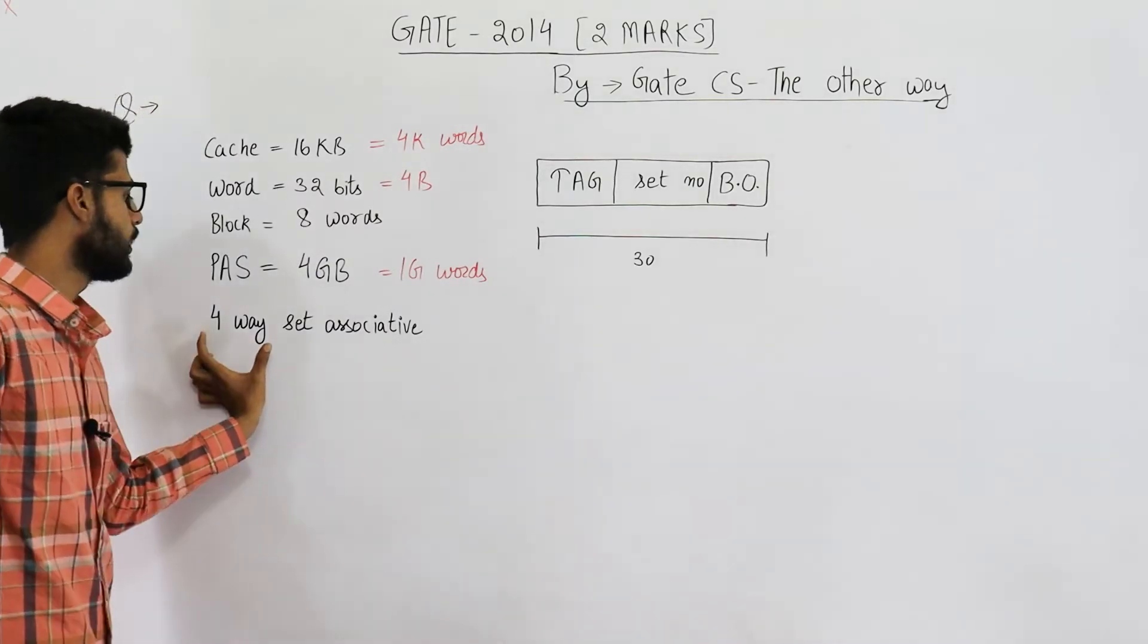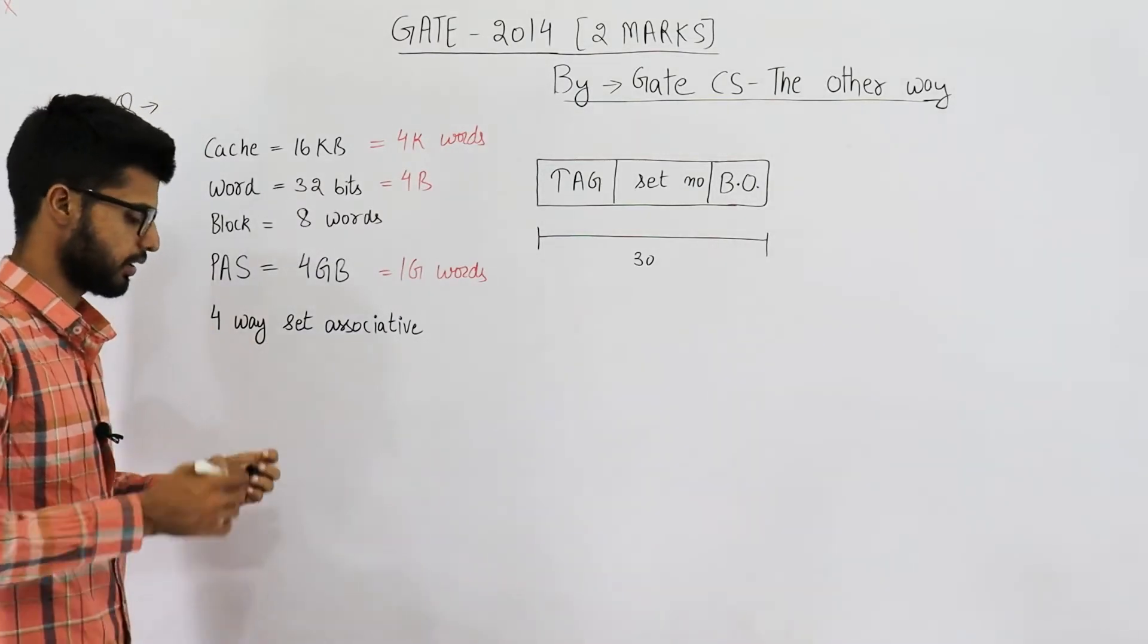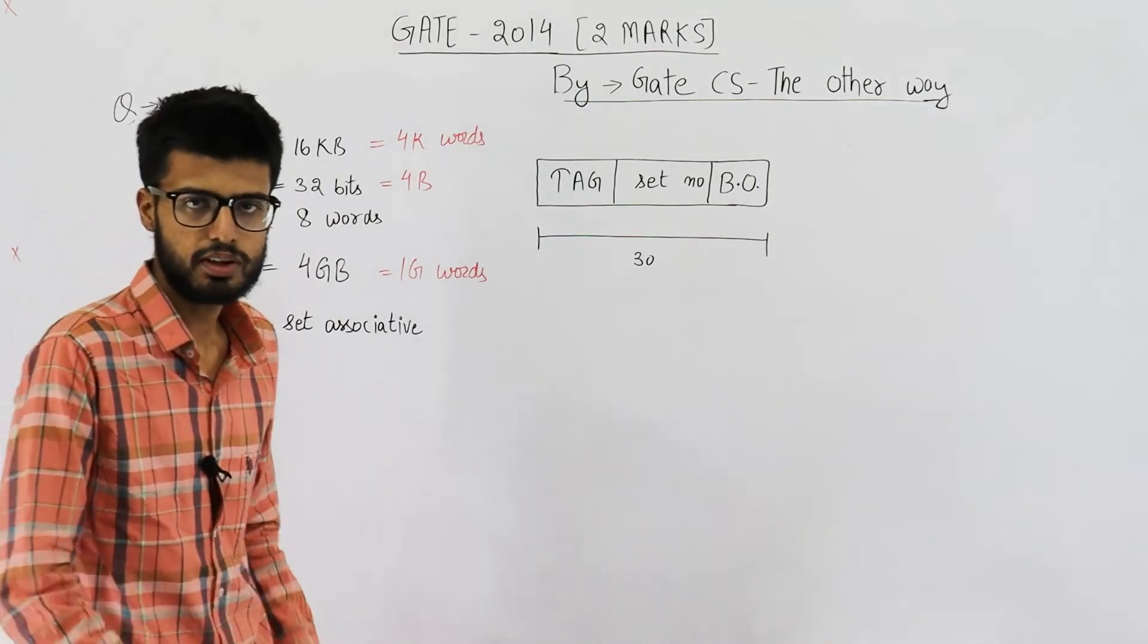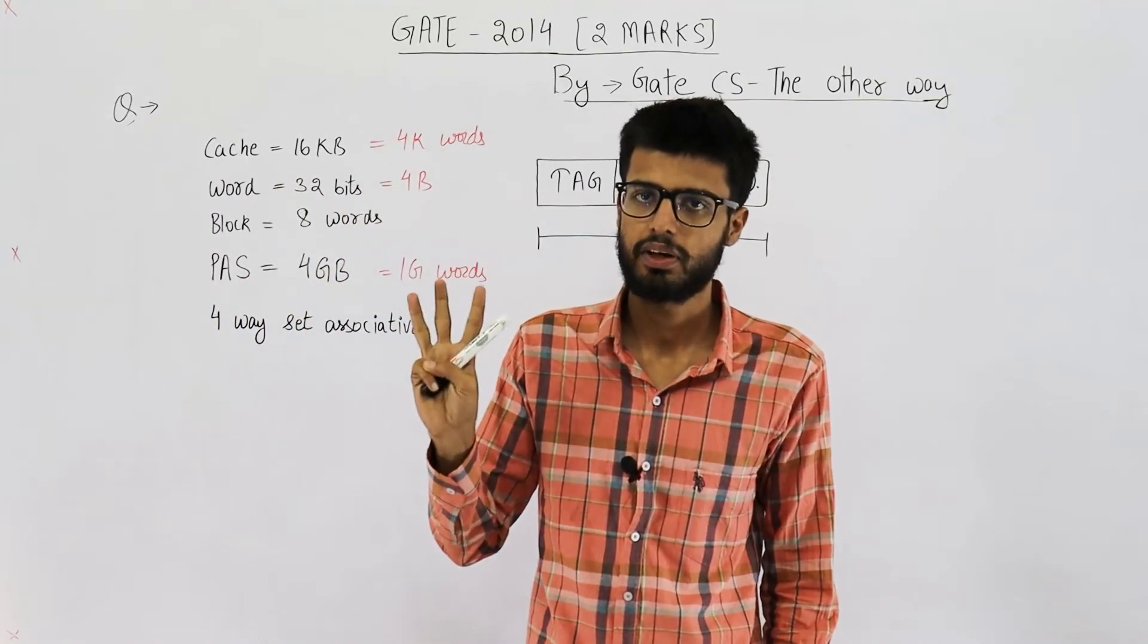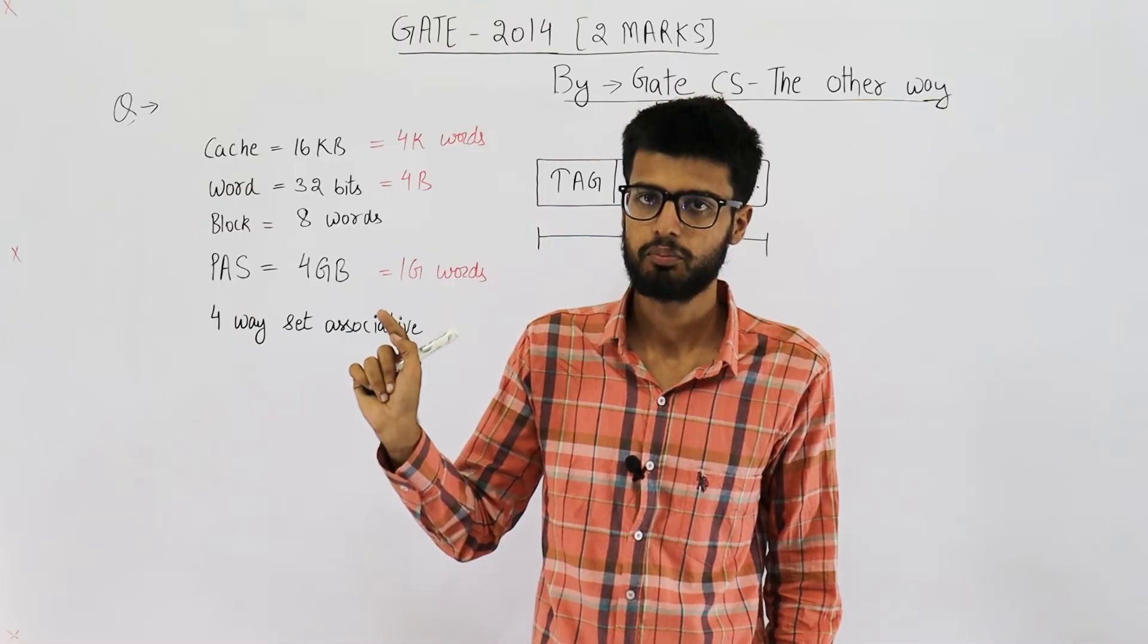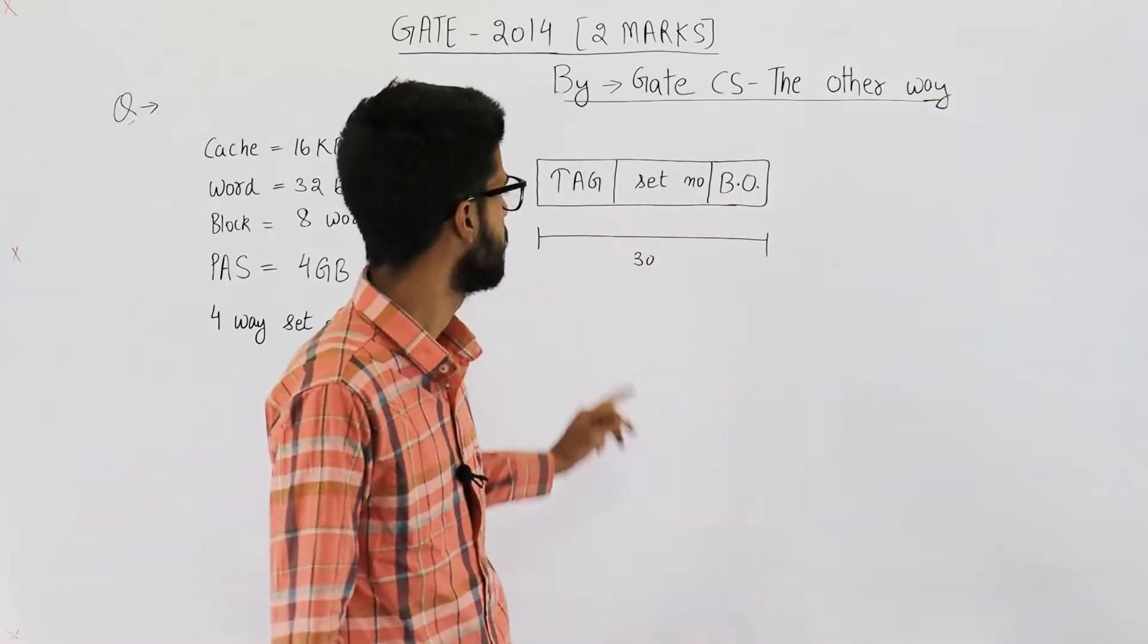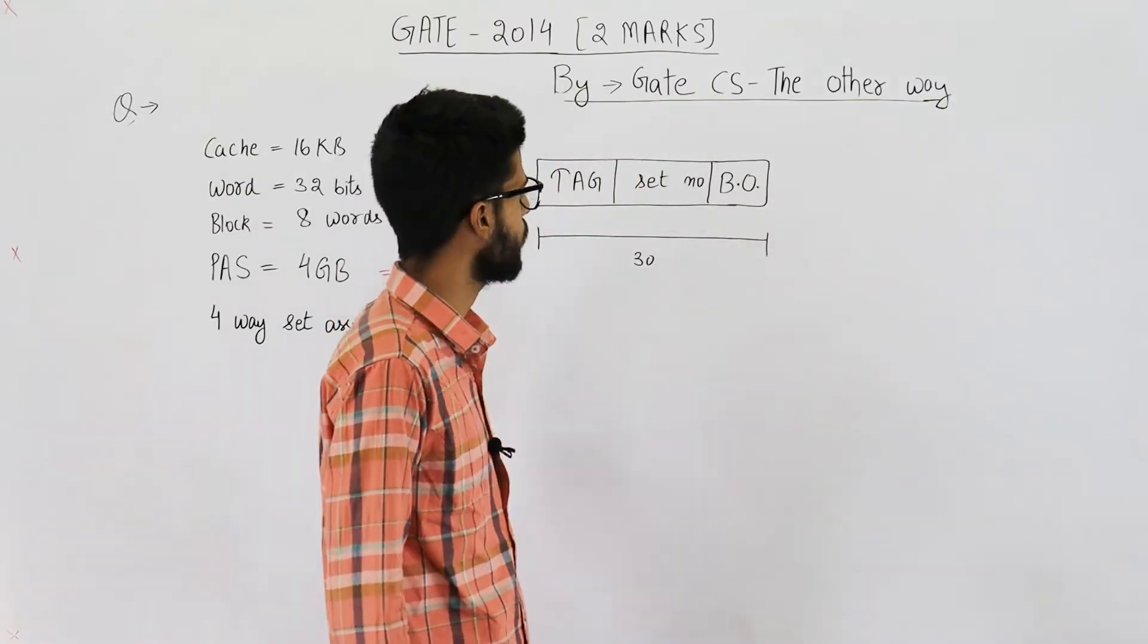And also, you know, in K-way set associative memory, we divide our physical address into three parts: tag, set number, and the block offset. Tag, set number, and the block offset.